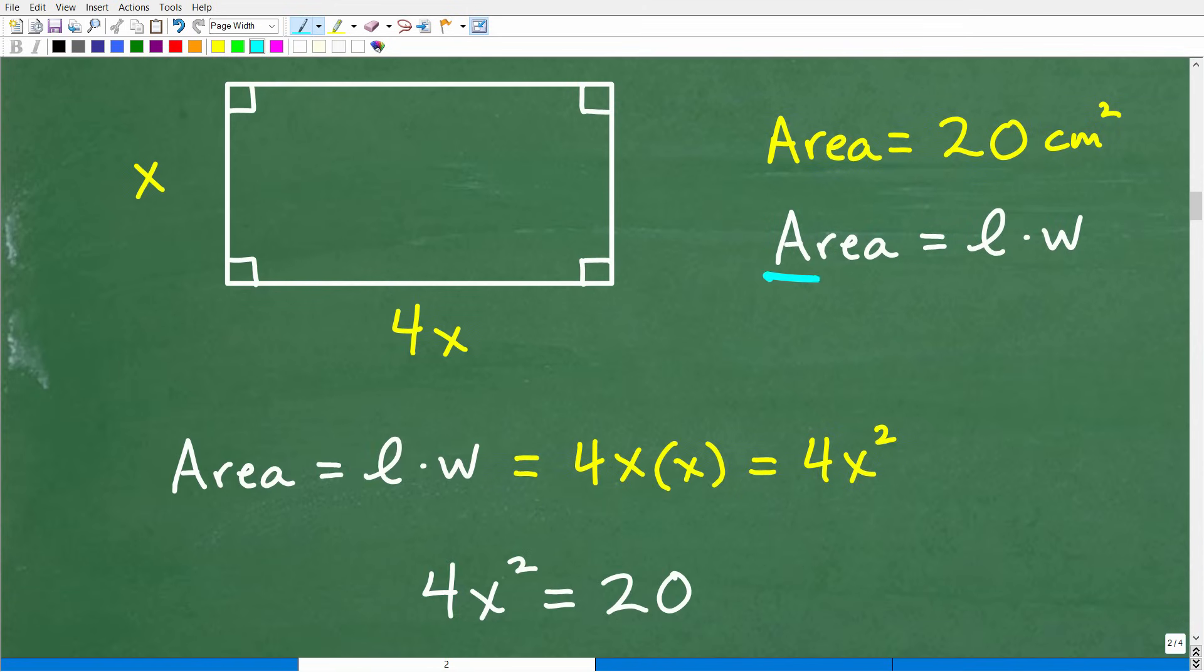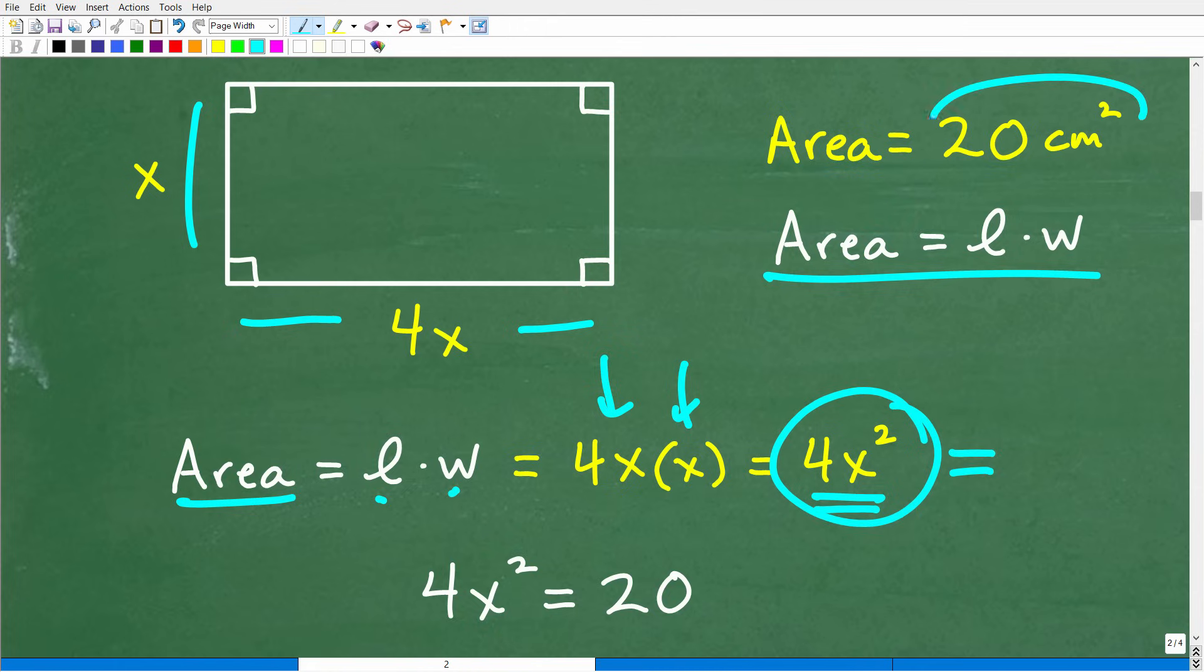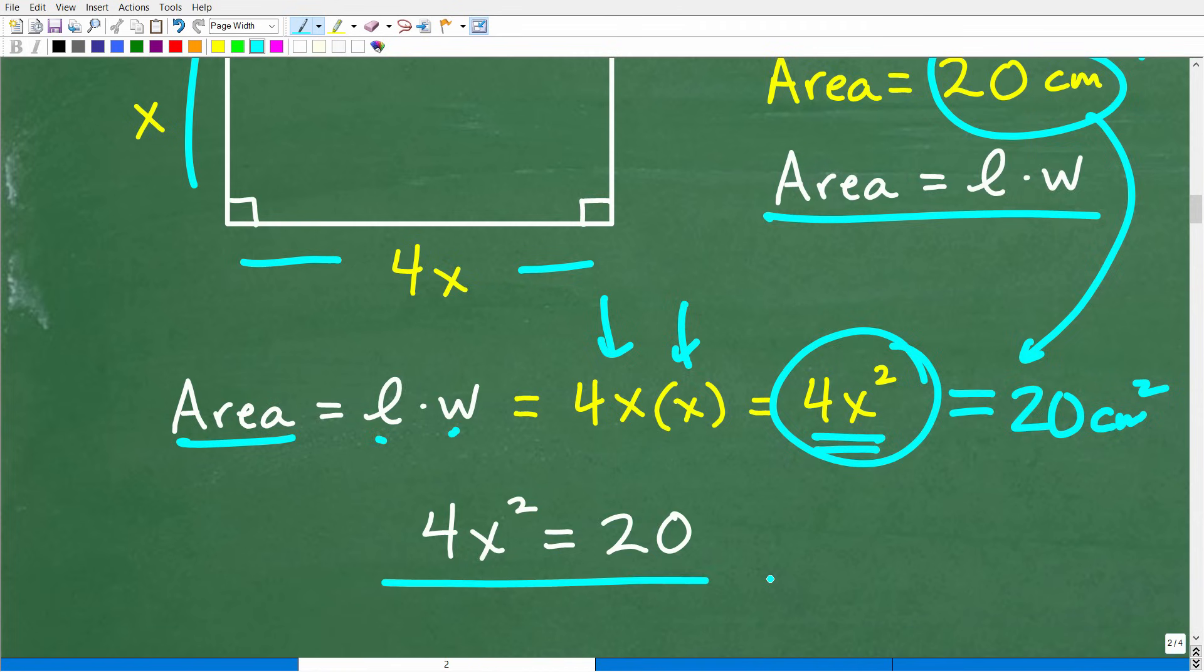Okay, so the area, again, is the length times the width. We have the length. We have the width. So the area equaled the length times the width. So we'll substitute the length, which is what? 4X. The width is X. So 4X times X is 4X squared. So this is what the area is equal to. But the area is also equal to this, okay, which is 20 centimeters squared. So we can drop the units of measure here in a second and just kind of basically have this expressed in this way, 4X squared is equal to 20.